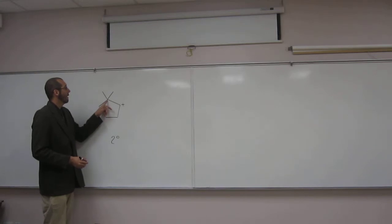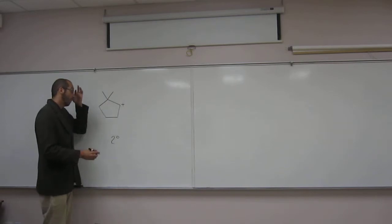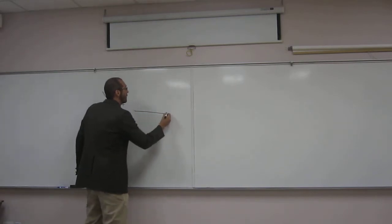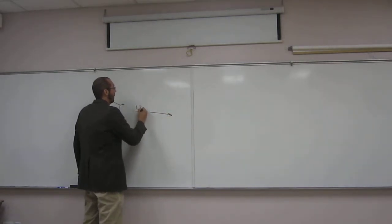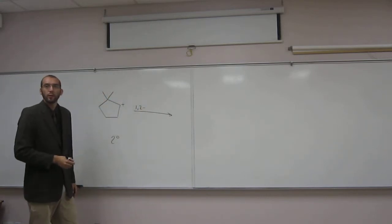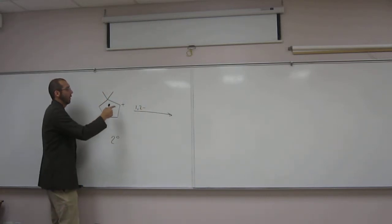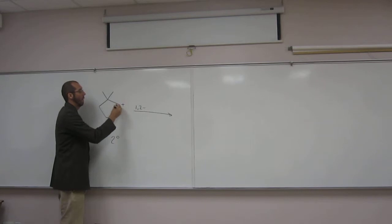So we can imagine if we can get it to there somehow, it could rearrange to be a tertiary. Okay, so remember, rearrangements, these rearrangements happen in a one-two fashion. Okay, so the carbocation is one, and a carbon alpha to that carbocation would be two.